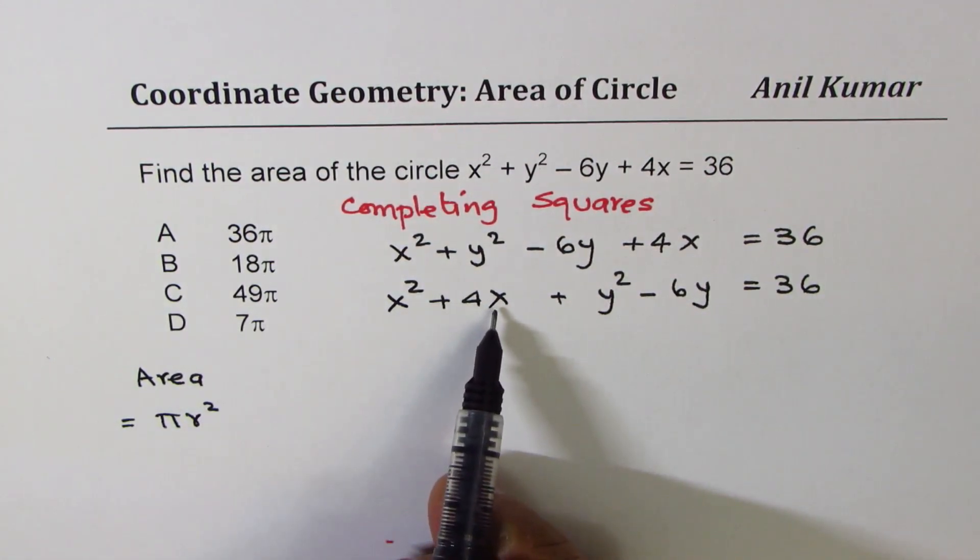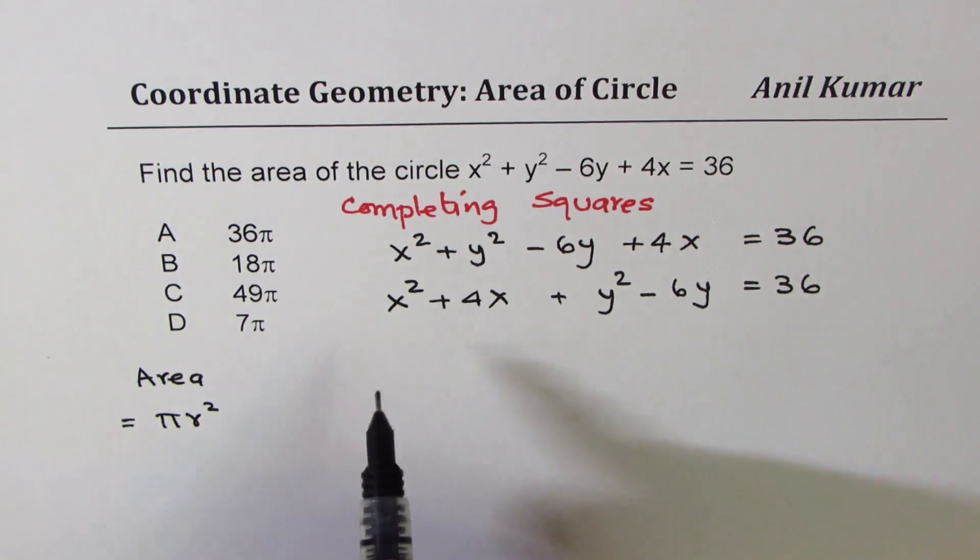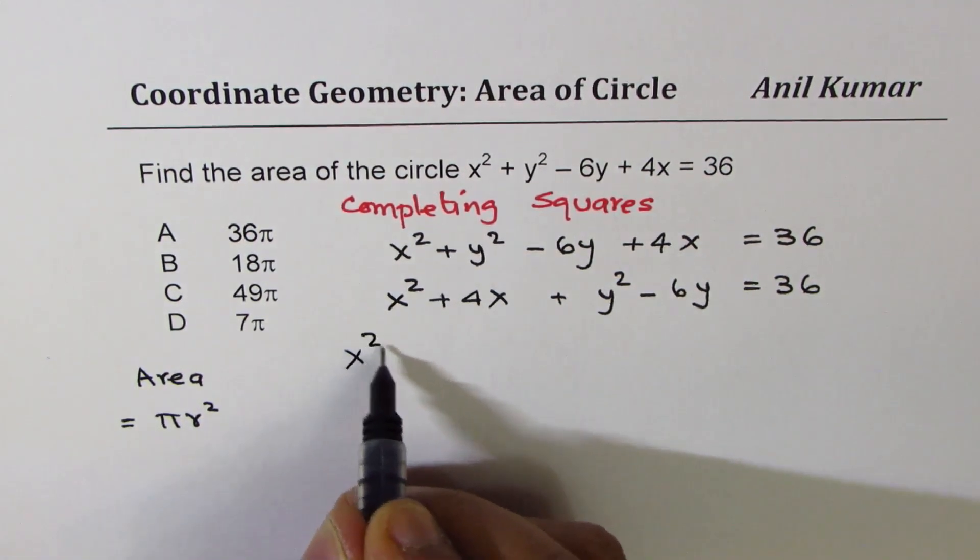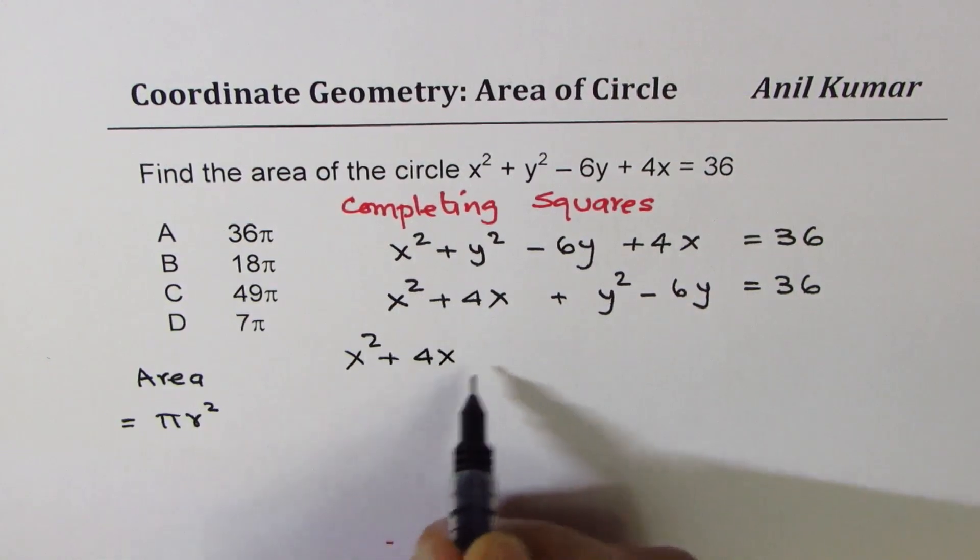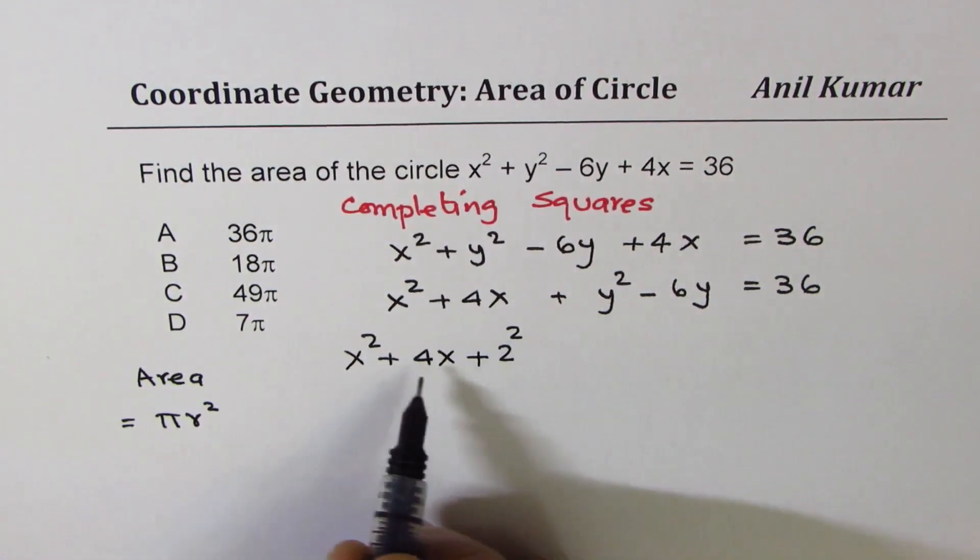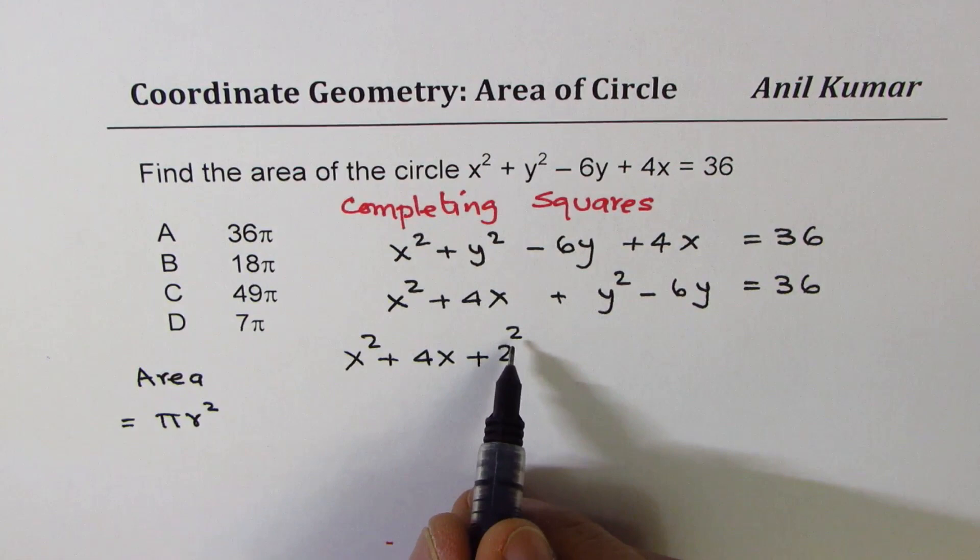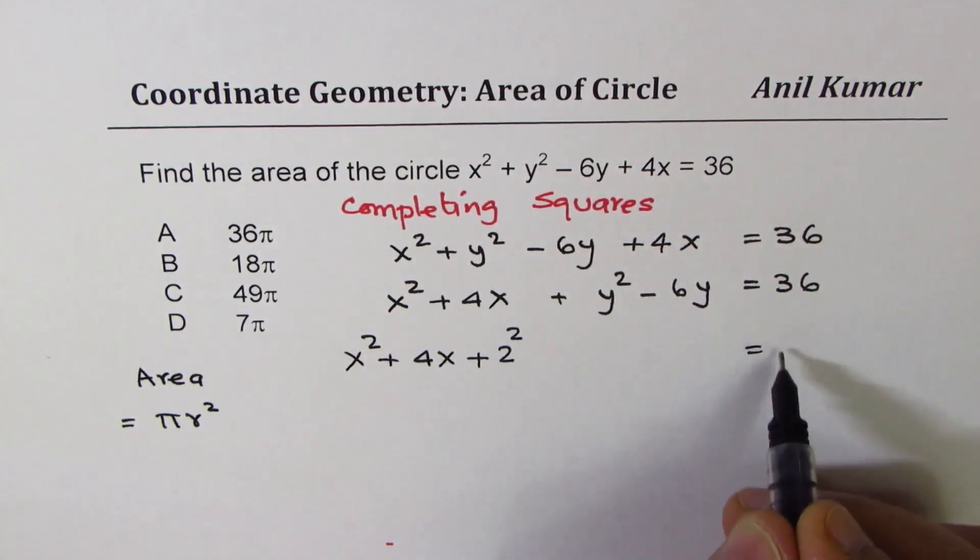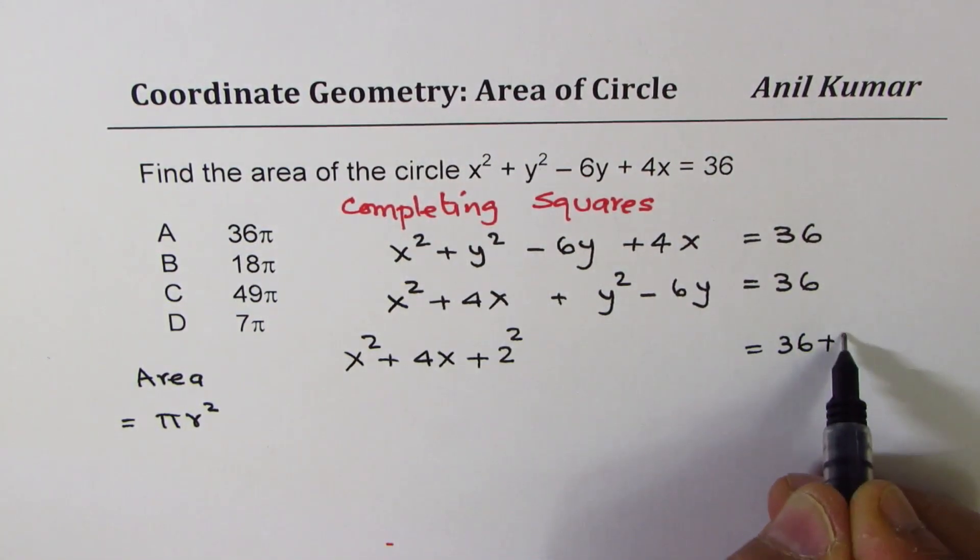Now here, to complete the squares, we have to add half of 4, which is 2. So we could write this as x² + 4x + 2². As soon as you add 2² here, you have to do it on the right side also. So we will do 36 + 2².